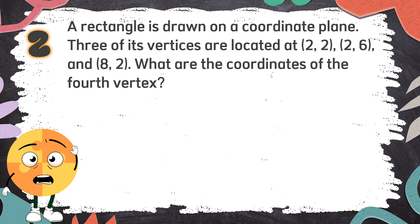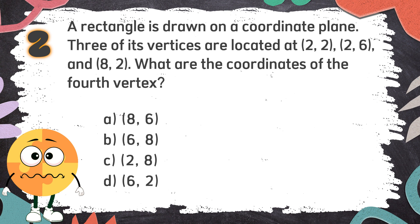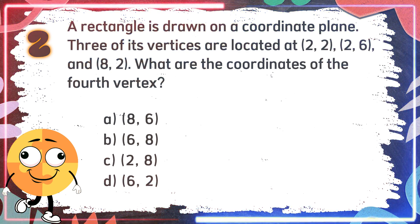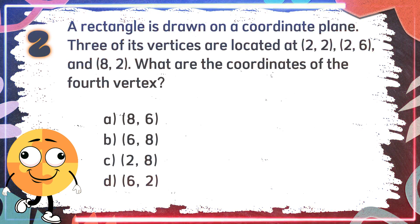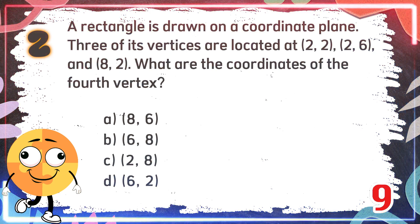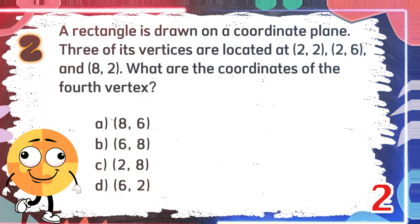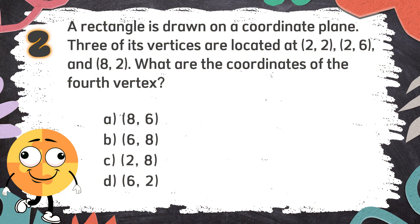Number 2: A rectangle is drawn on a coordinate plane. Three of its vertices are located at (2, 2), (2, 6), and (8, 2). What are the coordinates of the fourth vertex? The choices are: A. (8, 6), B. (6, 8), C. (2, 8), D. (6, 2). The correct answer is A, (8, 6).